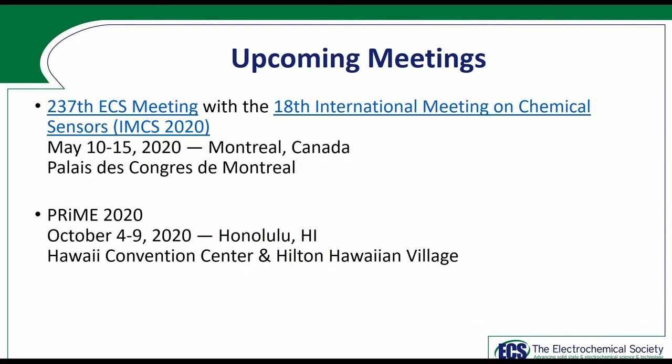The upcoming spring 2020 meeting is the 237th ECS Meeting, co-located with the 18th International Meeting on Chemical Sensors, held in Montreal, Canada from May 10th through 15th. Our largest meeting is PRIME 2020, coordinated with the Electrochemical Society of Japan and the Korean Electrochemical Society, attracting more than 4,000 attendees, with a large program October 4th through 9th.